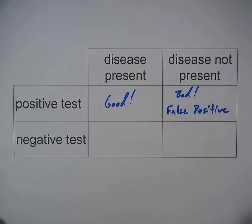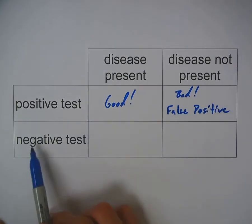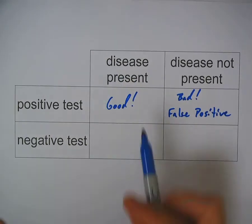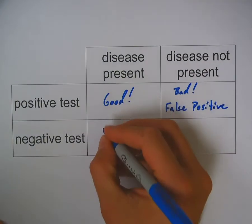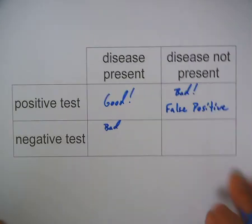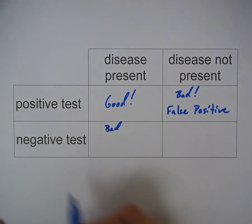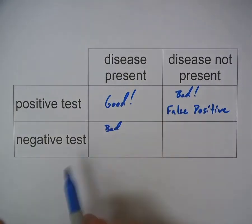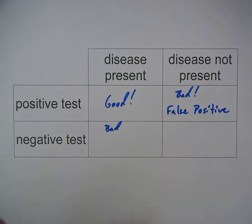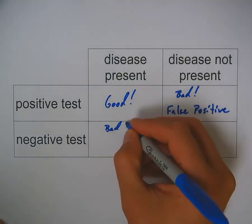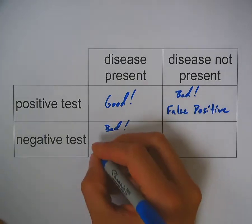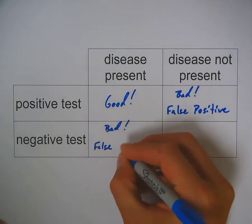Now if we take a look at a negative test when the disease is present, that's also a bad outcome. You don't want the dog to test negative if they actually have the disease. In that case the disease might spread and the side effects may continue. Since this is a negative test that was incorrect, we call this a false negative.